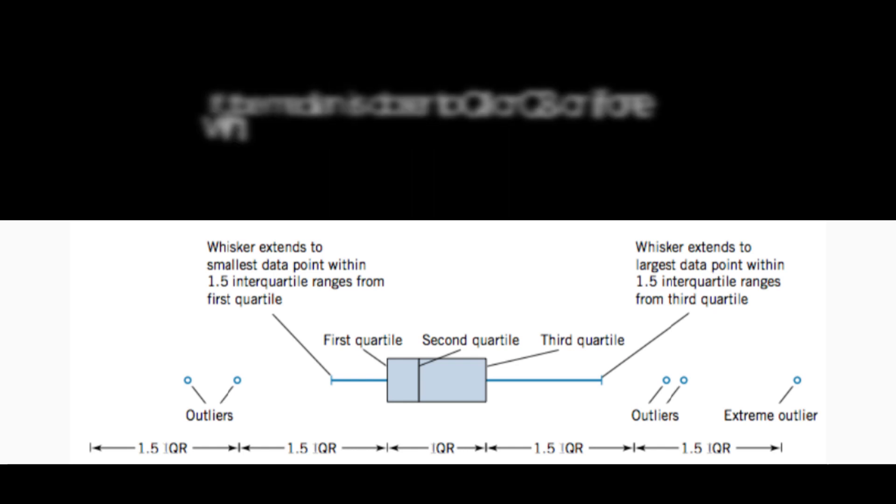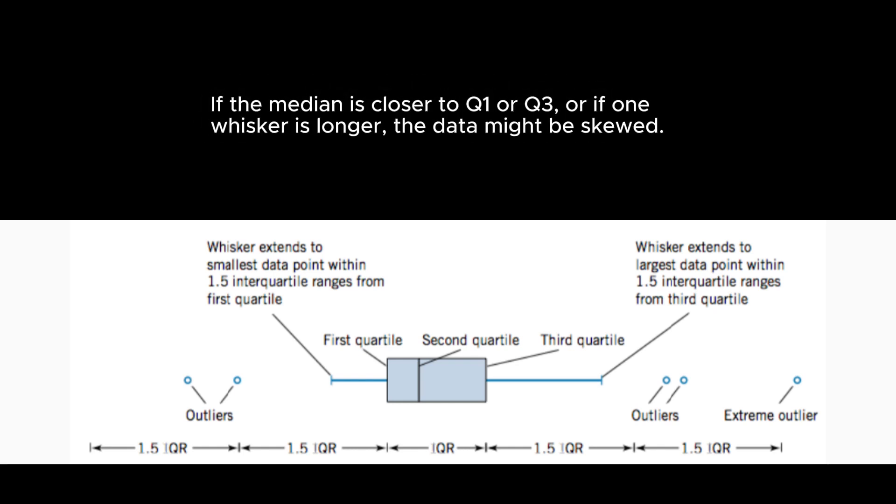If the median is closer to Q1 or Q3, or if one whisker is noticeably larger than the other, the data distribution might be skewed.